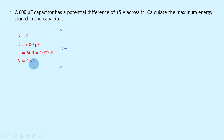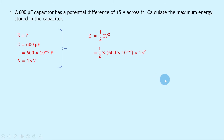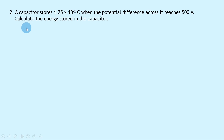Writing down our energy equation in terms of capacitance and potential difference, we have E equals a half CV squared. Substituting in the numbers gives us a half times 600 times 10 to the minus 6 times 15 squared, and putting that into your calculator gives a final answer of 6.8 times 10 to the minus 2 joules.